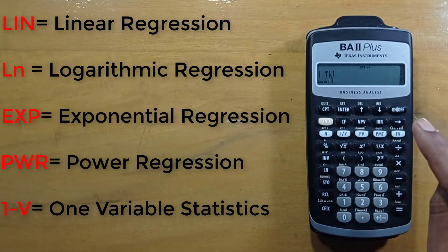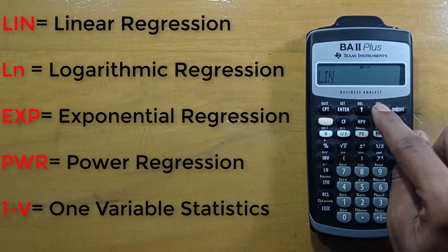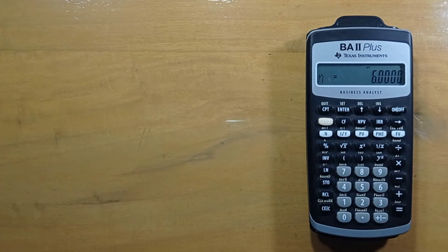To select, just press this down arrow. Here n equals six, indicating that we have entered six pairs of values.